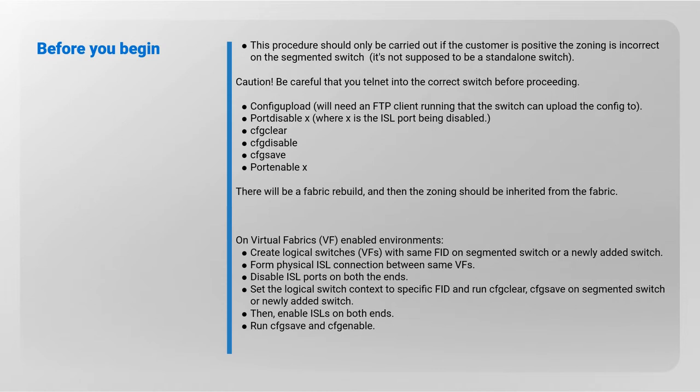Port disable X, where X is the ISL port being disabled. CFG clear: to clear all the zone information in the transaction buffer — all defined zone objects in the transaction buffer are deleted. CFG disable: to disable the current zone configuration; the fabric returns to non-zoning mode, where all devices can see each other. CFG save: to save the current zone configuration. Port enable X: there will be a fabric rebuild and then the zoning should be inherited from the fabric.